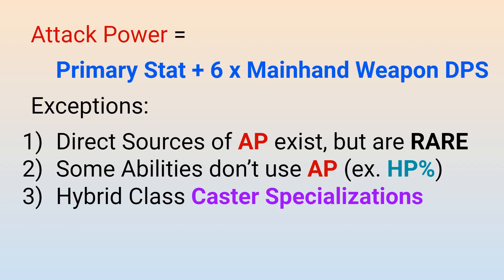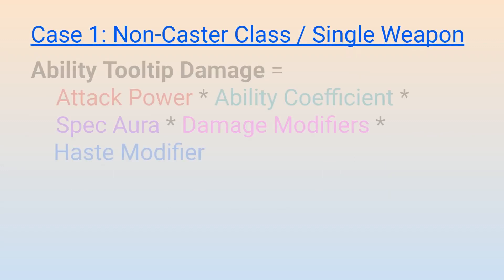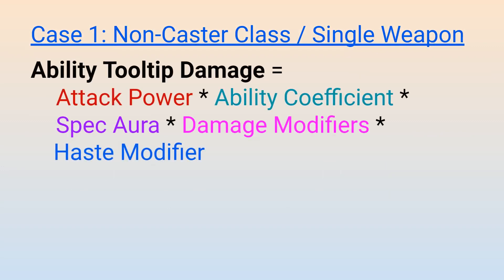For now, we are just going to ignore any potential exceptions and talk about how this base attack power value is modified before the final ability damage is calculated. In particular, we will be talking about four other inputs that are used to calculate ability damage: the ability coefficient, the spec aura modifier, all associated damage modifiers, and, when appropriate, the haste modifier.